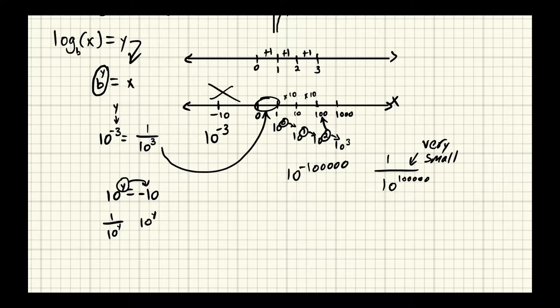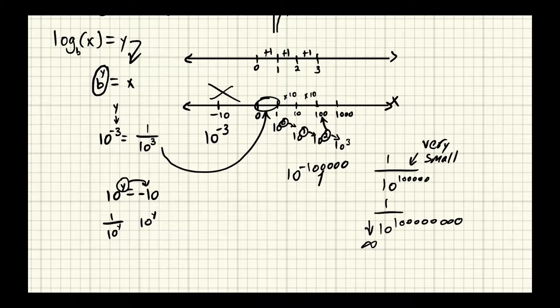And we can see that as this number grows, let's say 10 over one with a ton of zeros, this would be the negative number. This would basically go on to infinity.